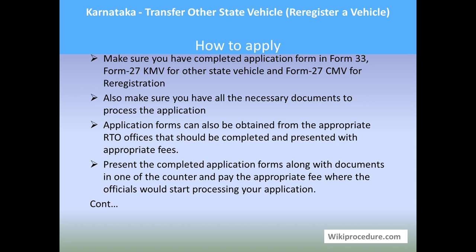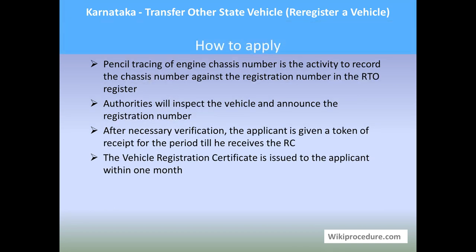The officer will mark the amount at the counter which you need to pay. Go to the counter and present your documents and pay the fees. Once they accept your documents, they will start processing your application. Processing begins with a pencil tracing of the engine number to verify the vehicle. They will check and verify all details from the user, and authorities will also inspect the vehicle and announce the registration number. After necessary verification, the application is given a token receipt, which serves until the applicant receives the RC. The vehicle registration certificate is issued to the applicant within one month.